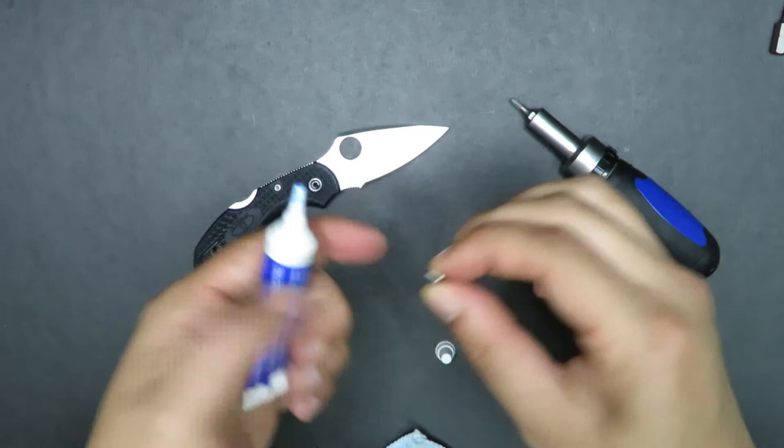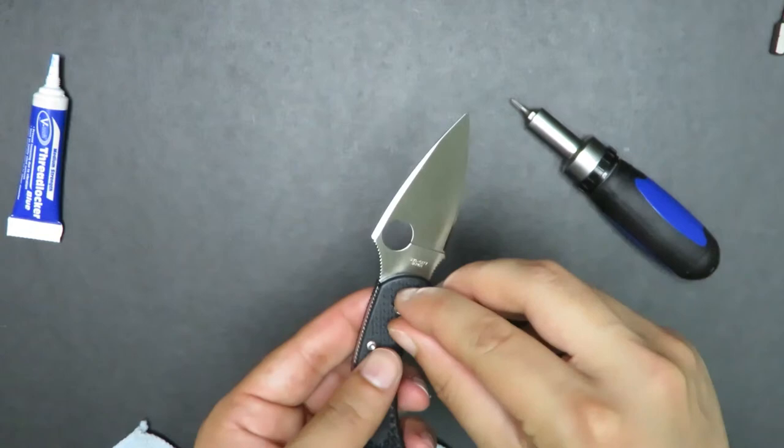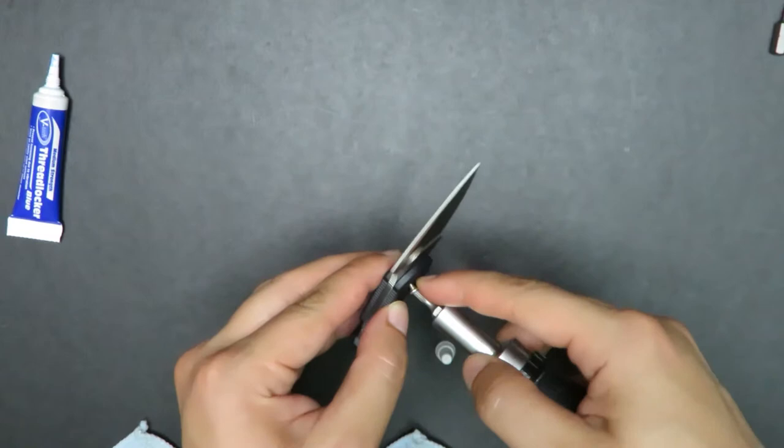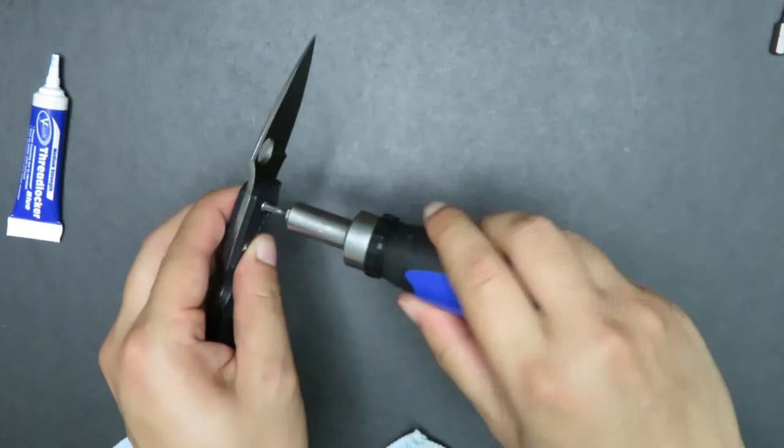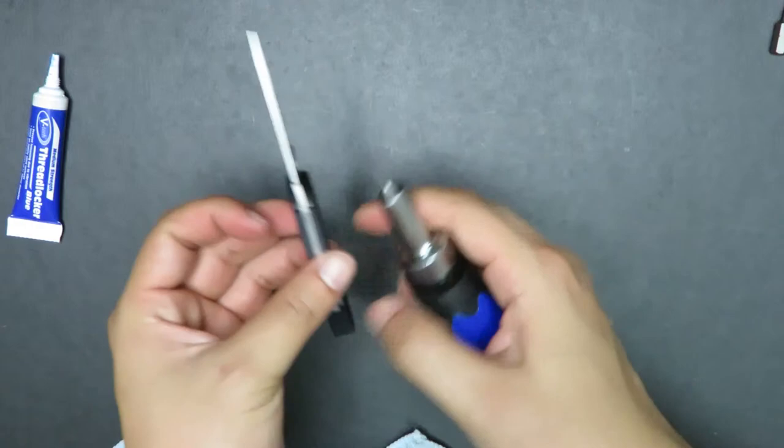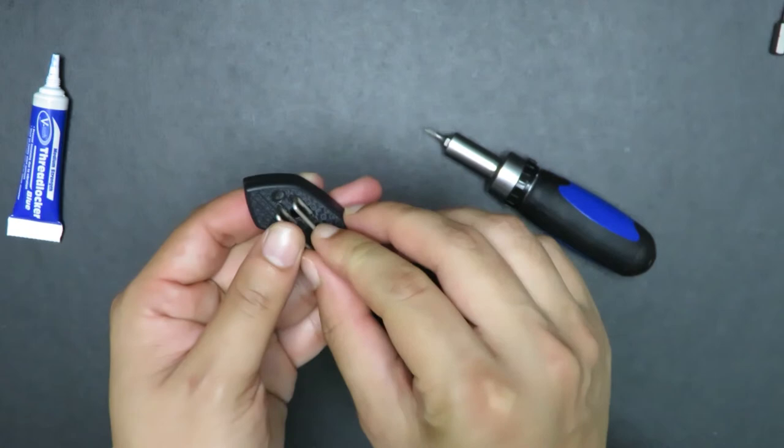All right. Almost forgot. A bit of Loctite around this pivot screw. Just a little bit. Hopefully, I don't waste it all like I did just now. All right. It's going in. Let me know in the comment section what's your favorite tool that you use. Whether it's a Wiha tool bit or something else. That is really tight. All right.